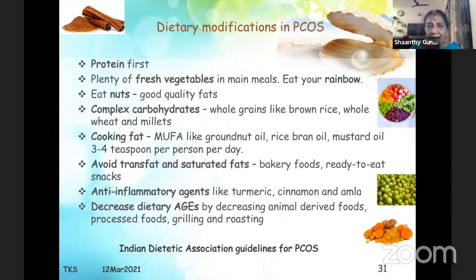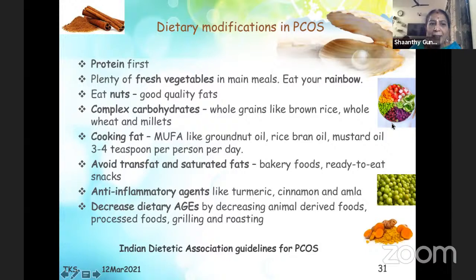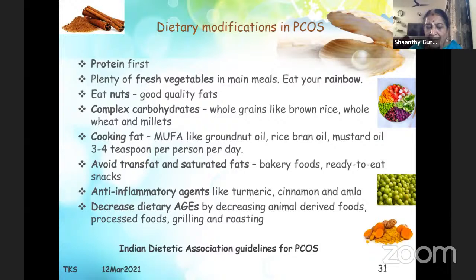Indian Dietetic Association guidelines for PCOS recommend: protein should be taken first; plenty of fresh vegetables in main meals — eat your rainbow; nuts and good quality fats; complex carbohydrates like whole grains — brown rice, whole wheat, and millets. Cooking fat should be monounsaturated fatty acids like groundnut oil, rice bran oil, and mustard oil, changed every month, and limited to three to four teaspoons per person per day. Avoid trans fats and saturated fats — bakery foods and ready-to-eat snacks are out.